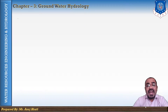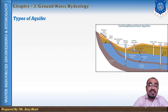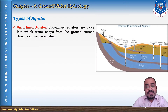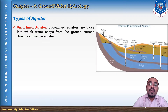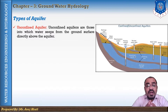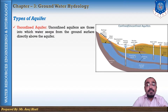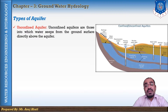Let's see the types of aquifers. Aquifers are classified into two categories: confined and unconfined. For unconfined aquifers, the water table forms the upper surface of the zone of saturation, extending below until the impermeable strata.